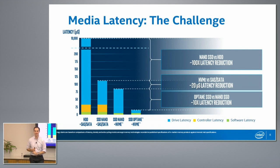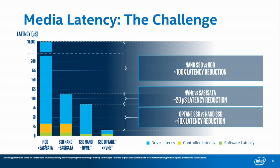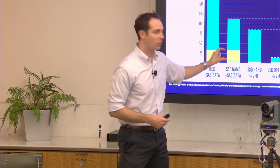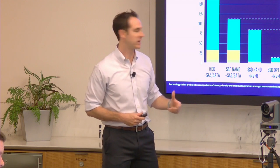Looking at this a different way: once upon a time, hard disks had a huge amount of media latency and rotational seek time. That meant this tiny sliver of protocol and software latency was effectively lost in the noise — it didn't really matter. But as soon as you start down the path of low-latency flash media, the software overhead becomes a non-trivial part of your workload. The first thing the industry did was adopt NVMe — removing protocol and controller latency because it was no longer lost in the noise.